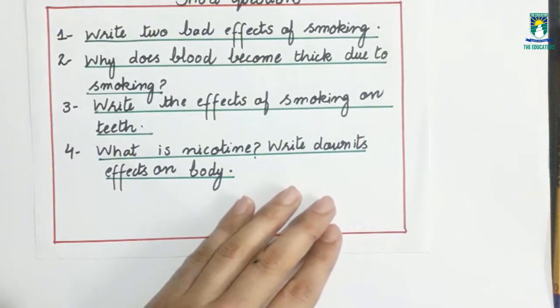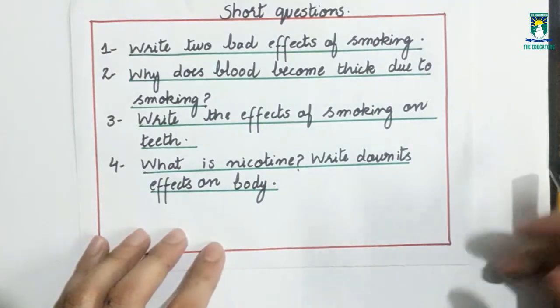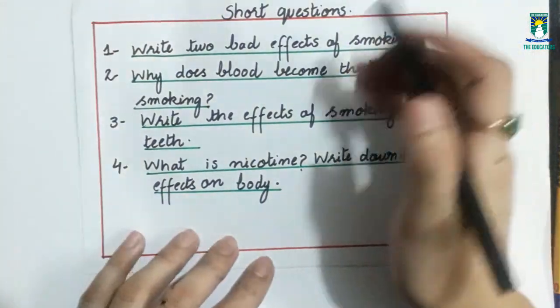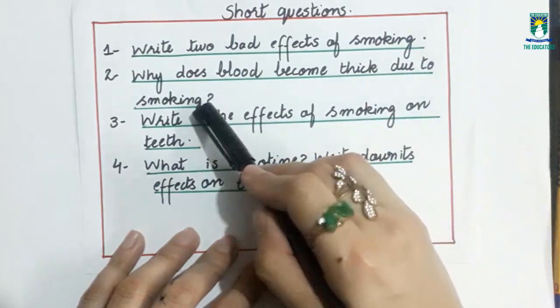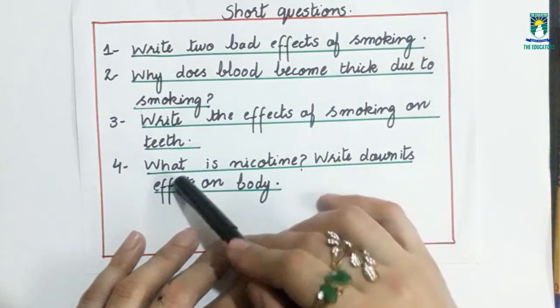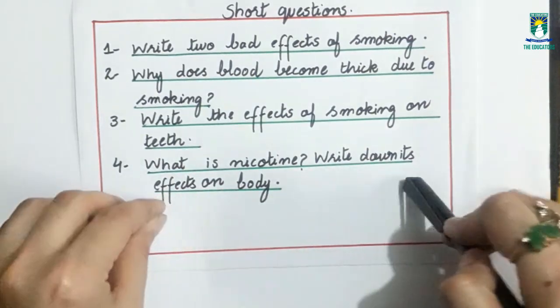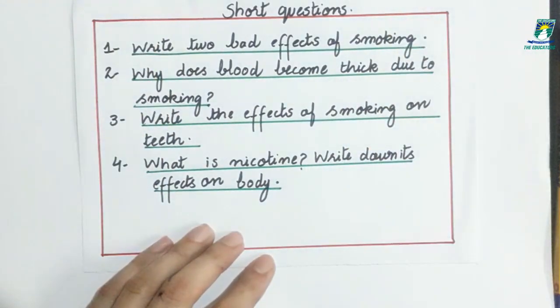Now we will discuss the short questions of this topic. You can be asked questions like: Write two bad effects of smoking. Why does blood become thick due to smoking? Write the effects of smoking on teeth. And what is nicotine? Write down its effects on body. In this form, short questions can be asked from this topic.